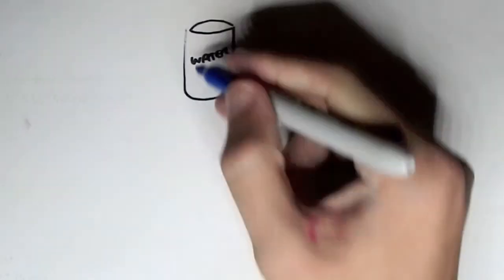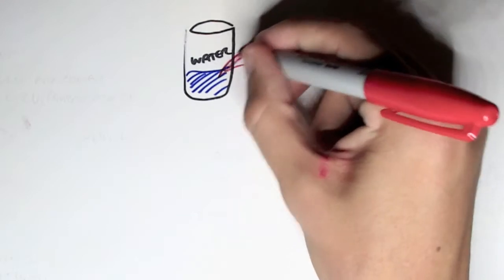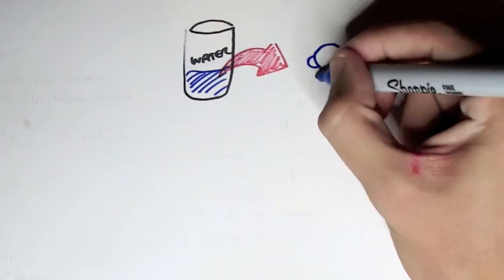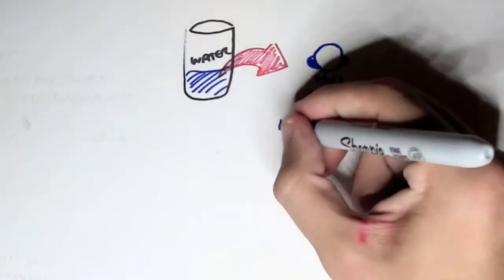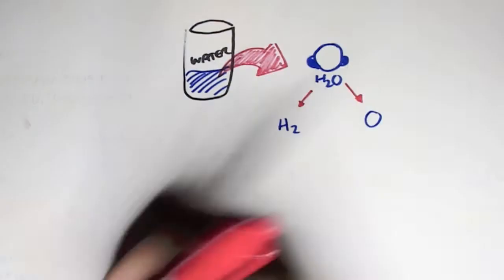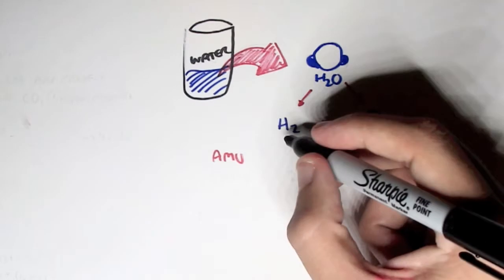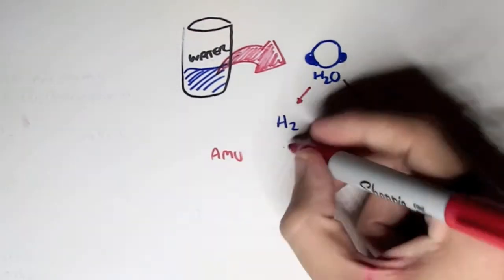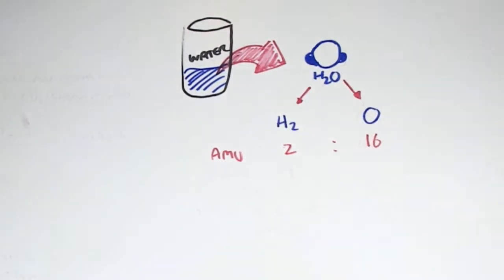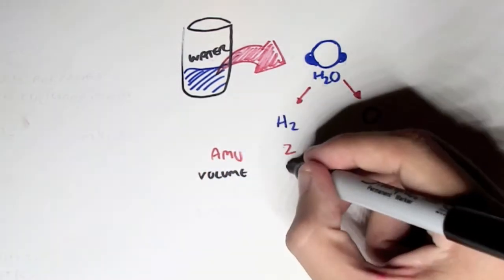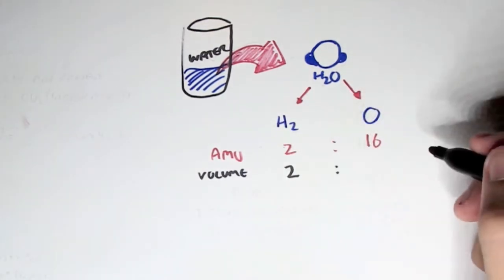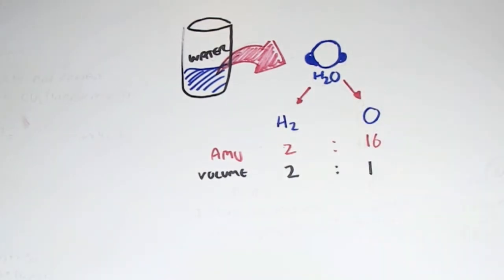For example, if we have a jar of water, let's look at its chemical structure. Water is essentially H₂O, consisting of 2 hydrogens and 1 oxygen. The atomic mass unit of 2 hydrogens is 2, and the atomic mass unit of oxygen is 16. We have 2 hydrogens and 1 oxygen.